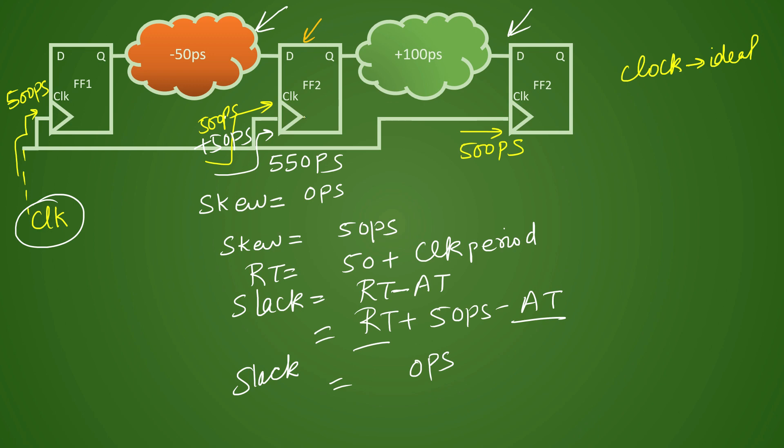So new clock latency as we mentioned earlier it is 550 picoseconds and in this particular path, this particular path it is your launch flop now. This was capture flop for previous timing path but this particular case it is the launch flop. So you have increased latency here.